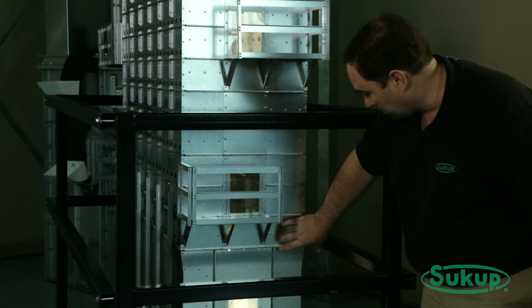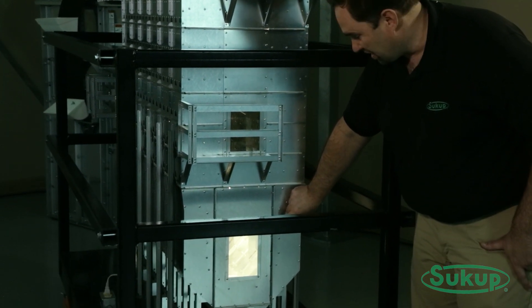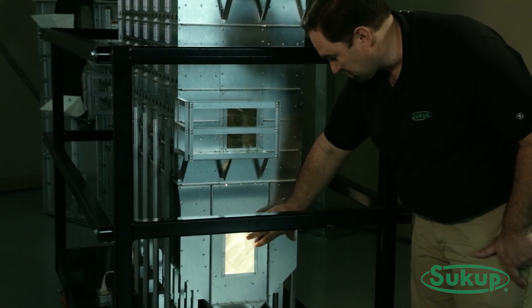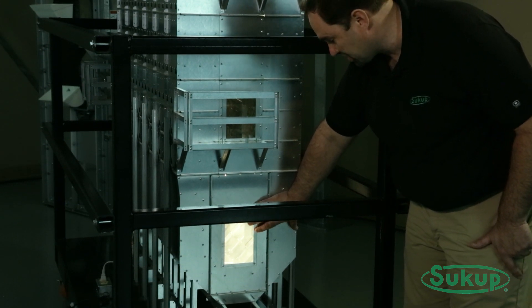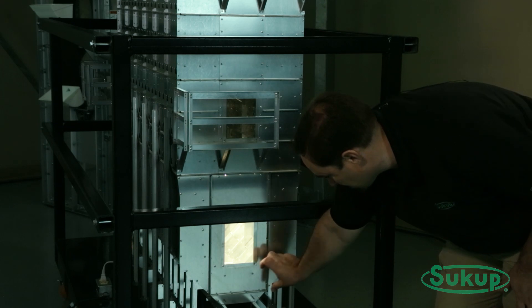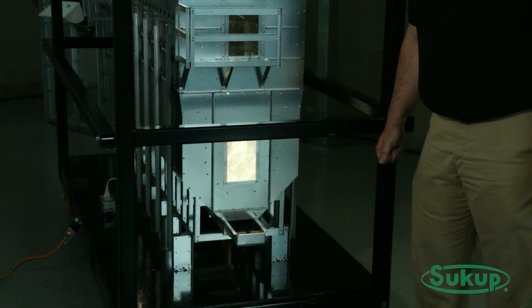From there, the grain continues to flow down and we transition down into the narrower screen section, and this is where our cooling is done. There's also an access to enter the dryer for cleaning and maintenance into the cooling section. Then it transitions down into one central discharge point, either a drag conveyor or an auger.